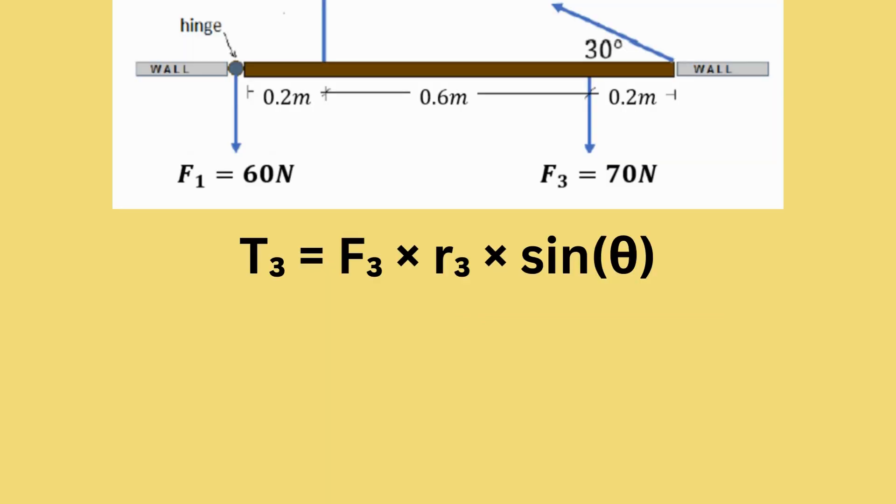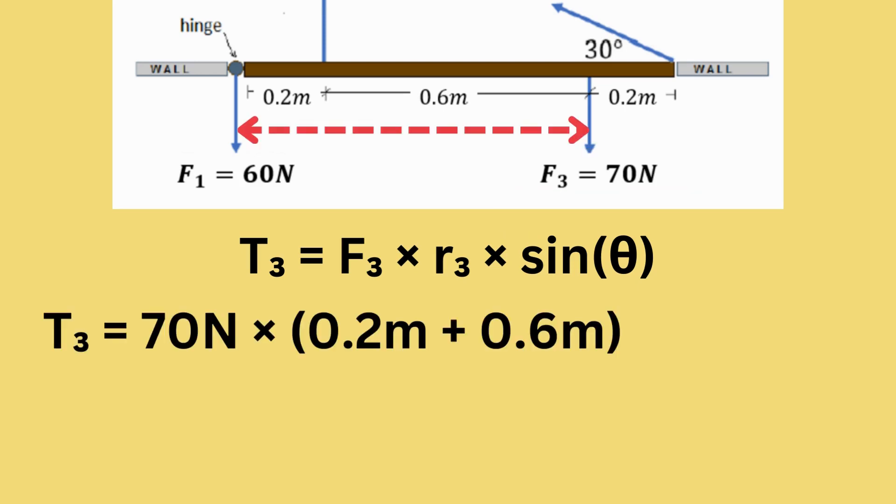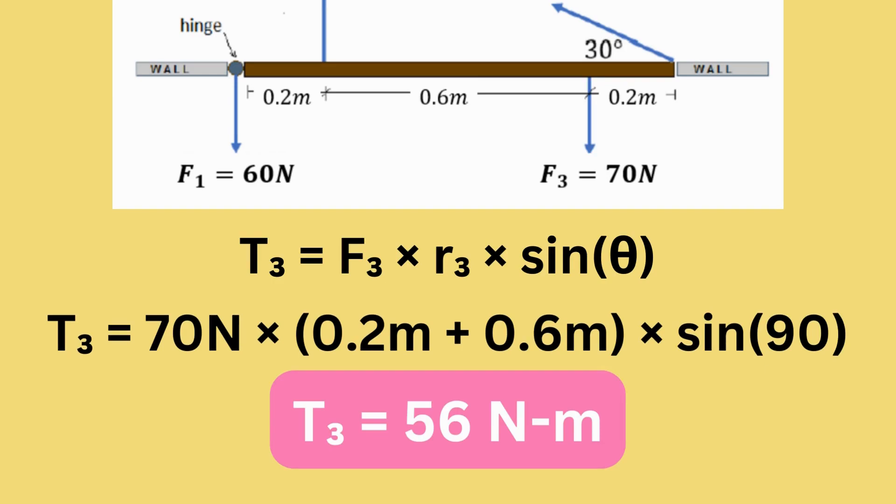Let us solve for T3. T3 equals 70 newtons times 0.2 meters plus 0.6 meters, which came from the distance of F3 from the hinge, times sine 90, because the force is applied perpendicular to the door. Finally, we can solve for the value of T3, which is 56 newton meters.